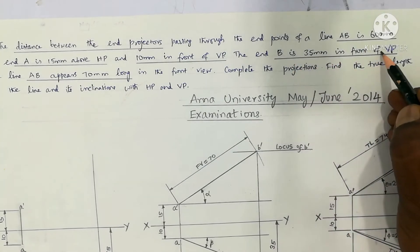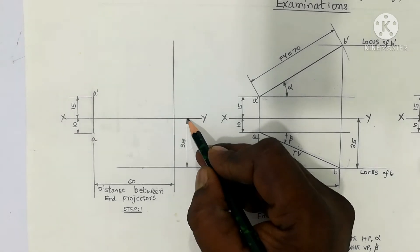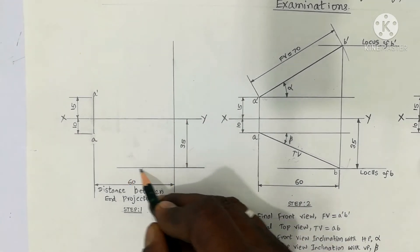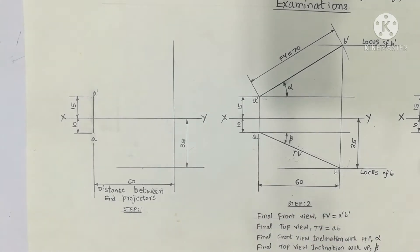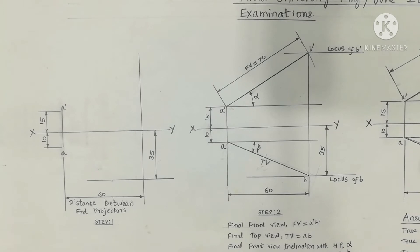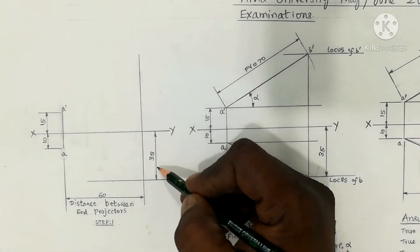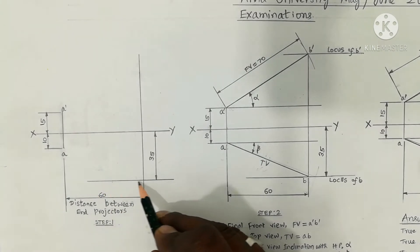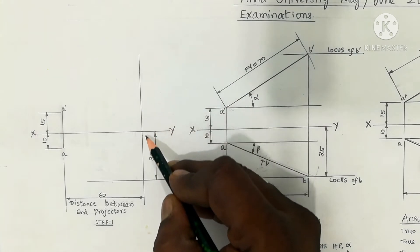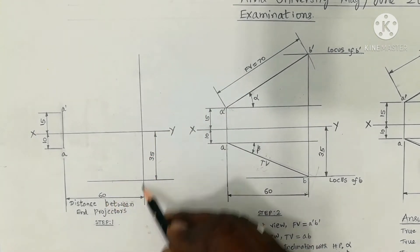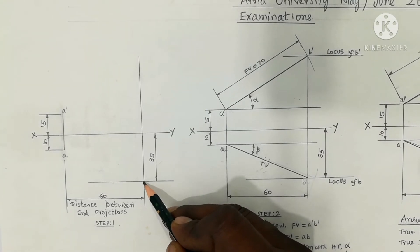For end point B, the distance from VP is 35mm — that is 3.5cm. Draw a horizontal locus line at 35mm. The point of intersection of this 35mm locus line with the vertical projector line gives the point B.